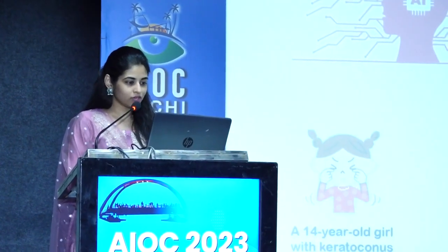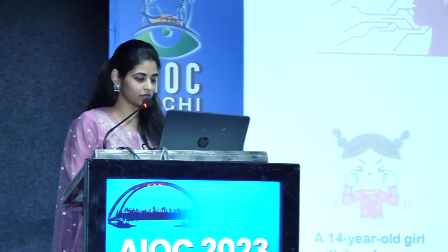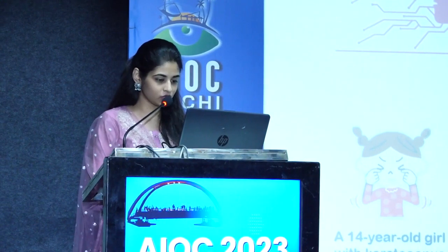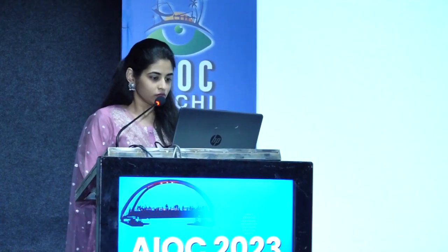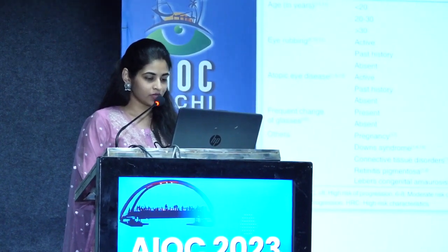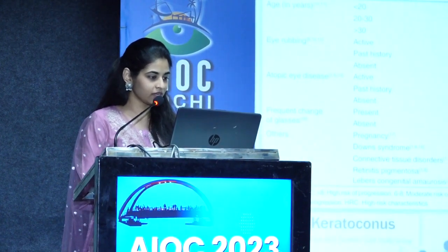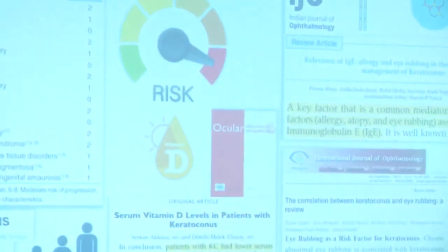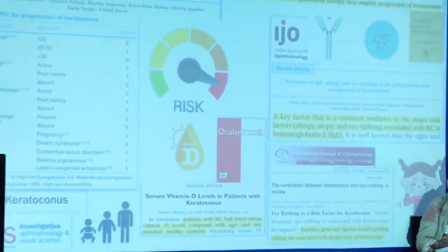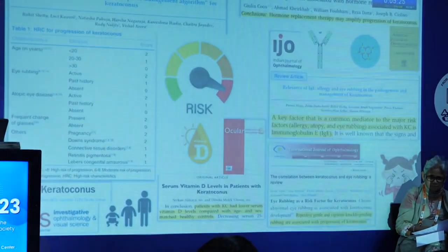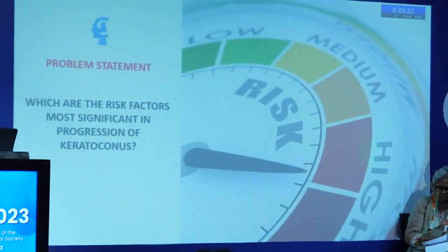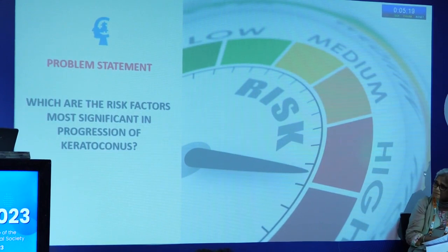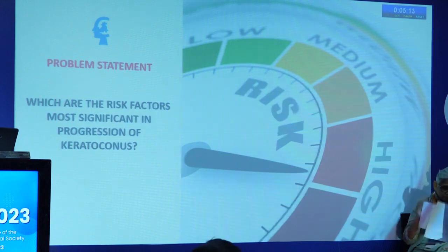We all know that artificial intelligence is a booming topic, and we wanted to see whether we can incorporate this in keratoconus and its progression and other associated factors. Coming to risk factors, we know there are a number of publications giving us risk factors for keratoconus. We have also published our own five-point nomograph indicating that age, eye rubbing, atopic eye disease, frequent change of glasses, and other factors play an important role in the progression of keratoconus. We wanted to determine if we can do a risk stratification in these patients and find out the most significant factor leading to progression.